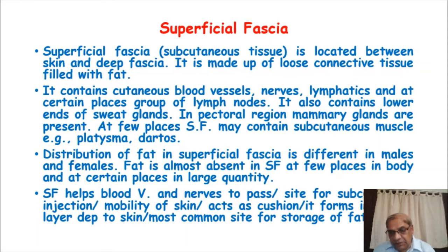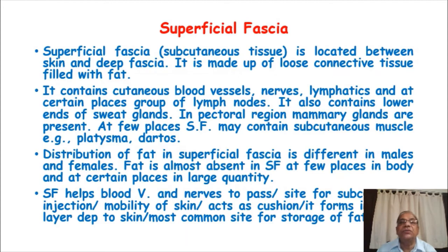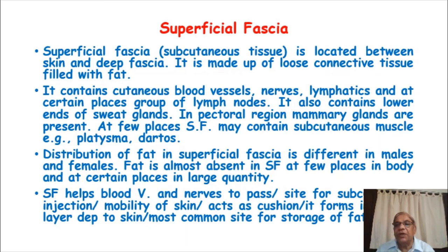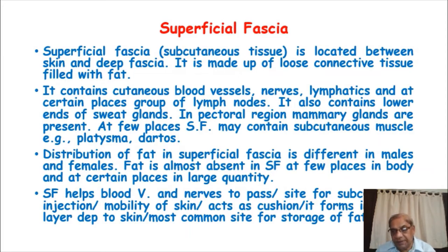The superficial fascia, which is present just beneath the skin, is also sometimes called the subcutaneous tissue — because it is beneath the skin. It is located between the skin and the deep fascia. It is made up of loose areolar tissue filled with fat. This superficial fascia contains the cutaneous blood vessels, nerves, lymphatics, and at certain places a group of lymph nodes.